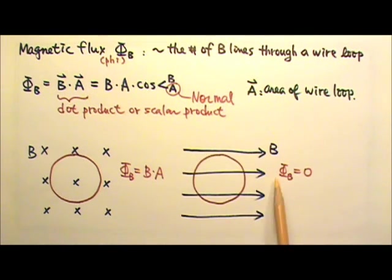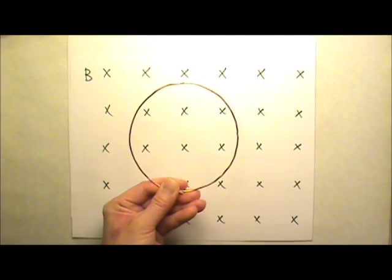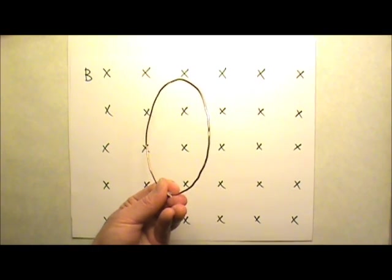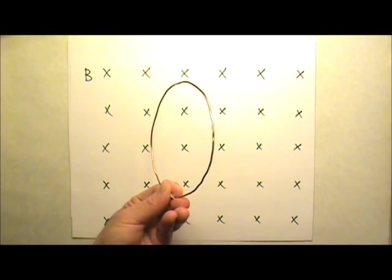Occasionally, the loop is like this, so it is obvious that there is no flux. In the rare case when the loop is slanted, we would usually be given an angle to use.